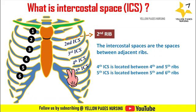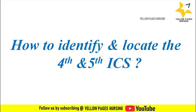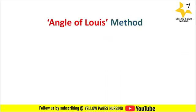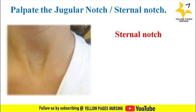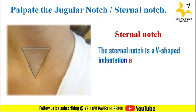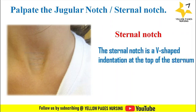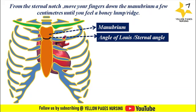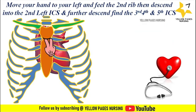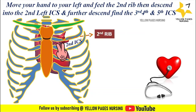These spaces are identified using the Angle of Louis method. The sternal angle is a useful place to start counting the ribs. First, palpate the jugular notch or sternal notch — a V-shaped indentation at the top of the sternum located in the midline of the neck. From the sternal notch, move your fingers down the manubrium until you feel a bony ridge called the sternal angle or Angle of Louis. Then move your hand to the left, feel the second rib, and descend into the second, third, fourth, and fifth intercostal spaces.